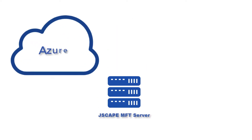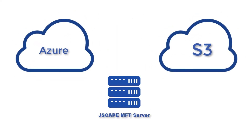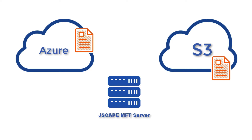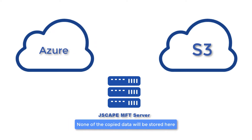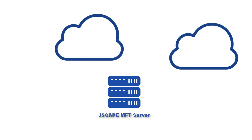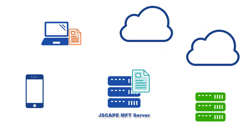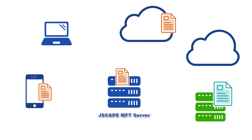As an example, we'll show you how to set up JScape MFT Server so that you can automatically copy data directly from Azure File Service to Amazon S3. Note that although JScape MFT Server will be orchestrating the copying process from Azure to S3, none of the files being copied will be stored on your JScape MFT Server host. One advantage of using JScape MFT Server is that, because you already use it for a wide range of file transfer workflows, adding cloud-to-cloud data transfers into the mix further simplifies management of your organization's file transfer processes.